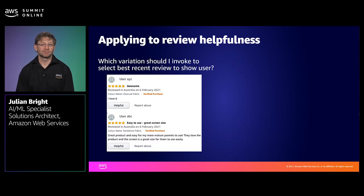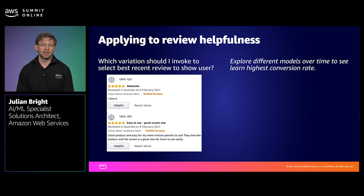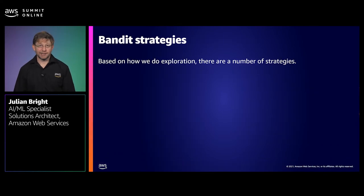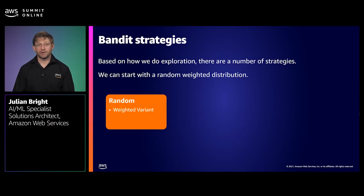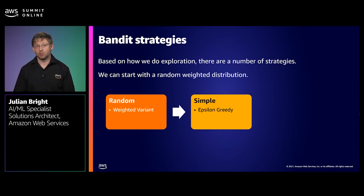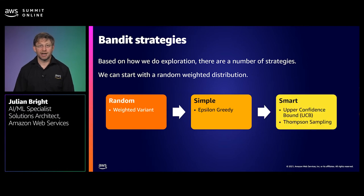Applying this to review helpfulness: we have a list of new reviews that we want to surface to our users that provide the most helpful insights when thinking about their purchase. We have a champion ML model and we want to explore how effective new variants Challenger 1 and Challenger 2 are at identifying helpful reviews. As we test these models with users, they provide feedback by clicking the helpful button, from which we calculate a conversion rate. Based on how we do exploration, there are a number of bandit strategies. We can start with a random weighted distribution whilst we're collecting user feedback, then use reward probability estimates to exploit the best performing models. A simple bandit strategy like epsilon greedy is one option, or there are more sophisticated strategies such as the upper confidence bound (UCB) or Thompson sampling that we'll learn about in the next few slides.